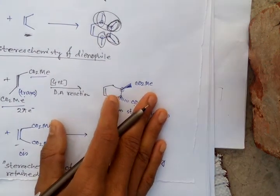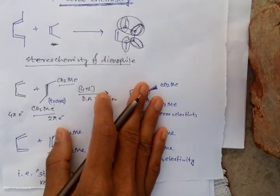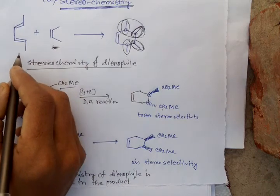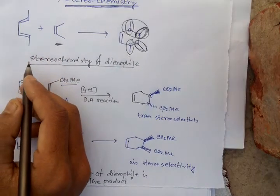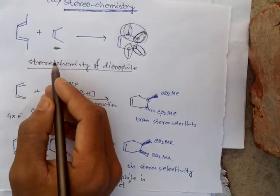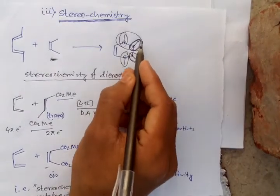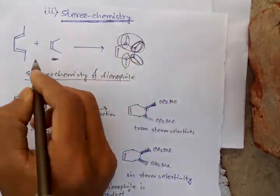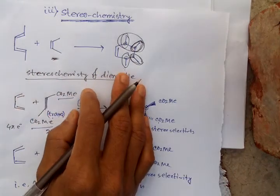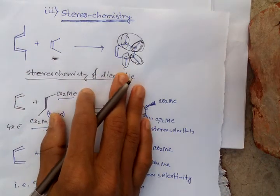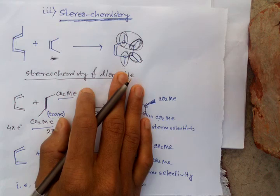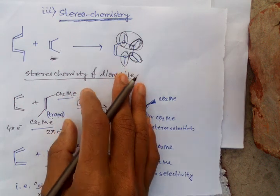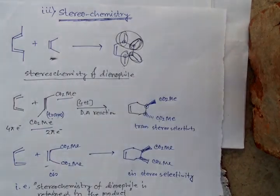And the next condition — the stereochemistry of the diene. And another one — the relation between these two conditions I will discuss in another part. So this part will be very important. Thanks for watching.